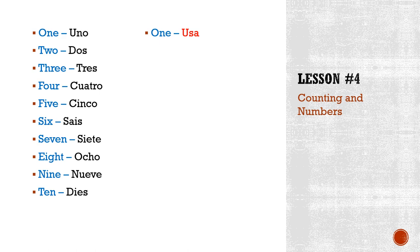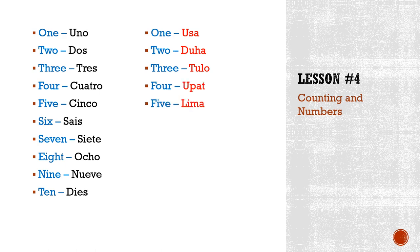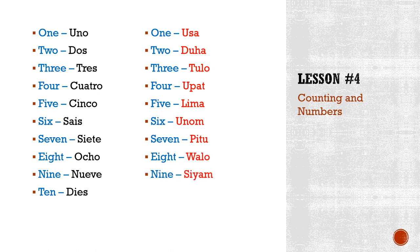In the pure Visayan version: one is usa, two is duha, three is tuluh, four is upat, five is lima, six is unum, seven is pito, eight is walo, nine is siyam, ten is napulo.